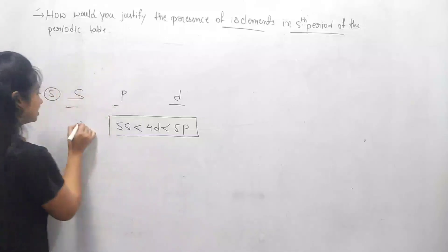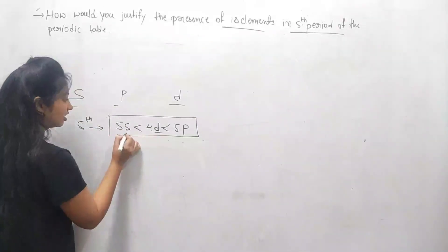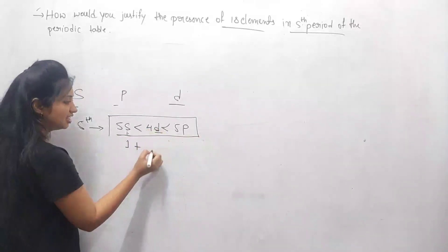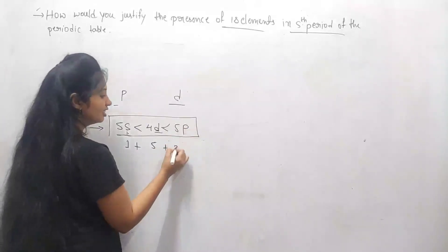We have in the s subshell one orbital, and in the d subshell we have five orbitals. In the p subshell we have three orbitals.